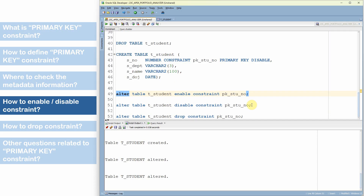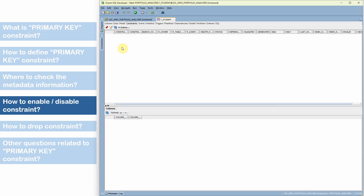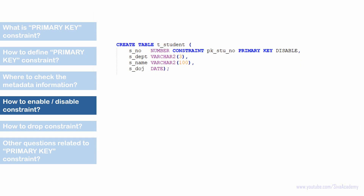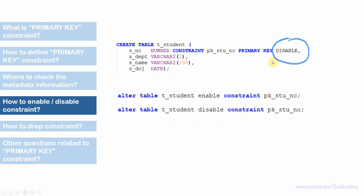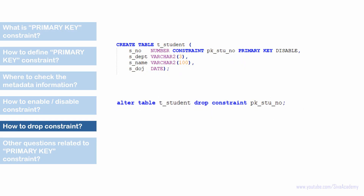Finally, to drop a constraint — if you no longer want the constraint in the table — the syntax is: ALTER TABLE table_name DROP CONSTRAINT constraint_name. After dropping, refresh the metadata and you can see the constraint is completely removed from the table.